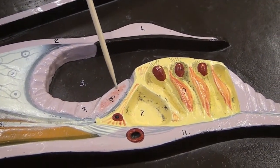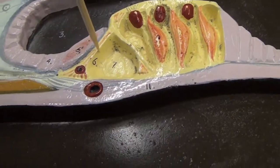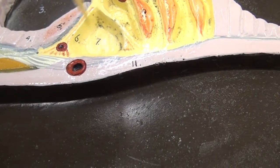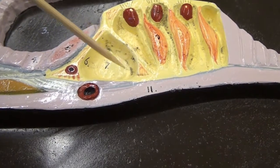Inner hair cell is 5, inner pillar, inner tunnel, and the outer pillar cell.